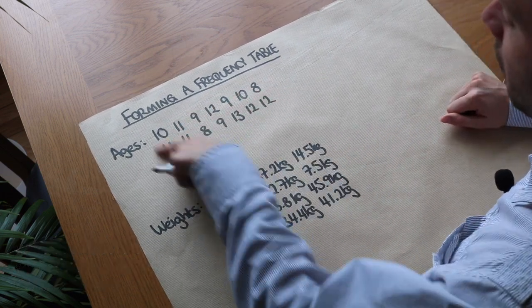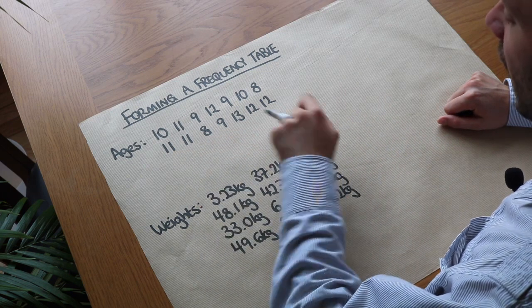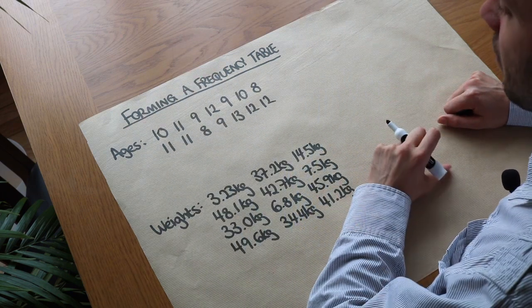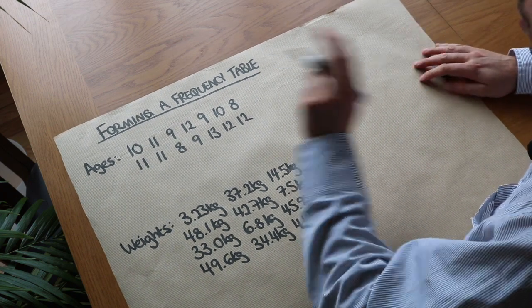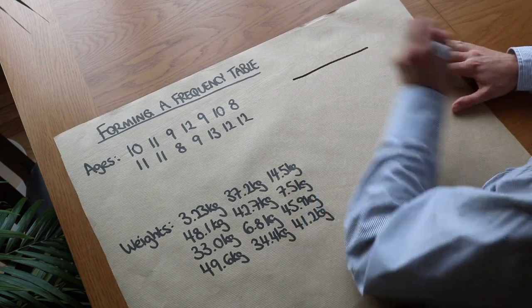Now this might be a really long list and we wouldn't want to have to list out every single value in a massively long list. So one thing we could do is put it into a frequency table to in some ways summarize the data that preserves all the data.